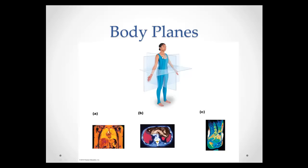The next part of this slide talks about body planes. When you're looking at a model or a tissue slide, it's just a portion of a body part that has been cut through a plane. There are three different major planes. A plane that divides the body into left and right sides is called the sagittal plane. Label this plane on your PowerPoint as the sagittal plane.